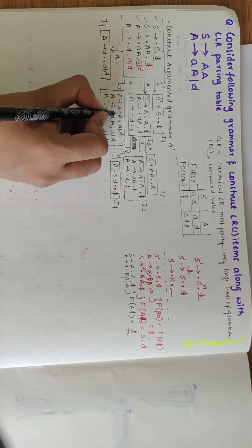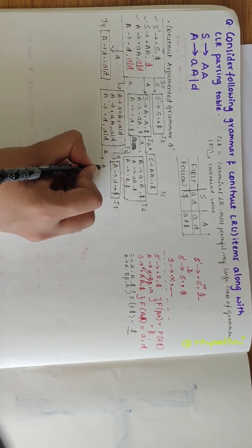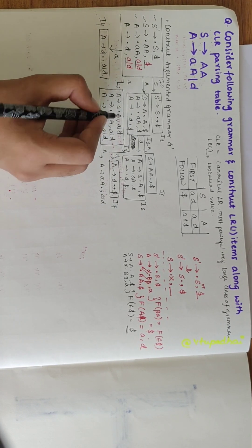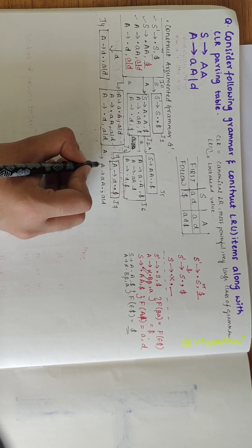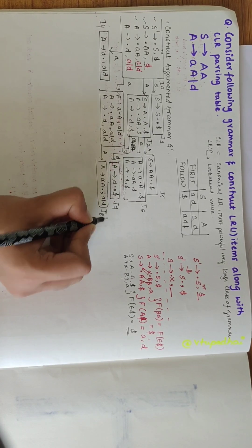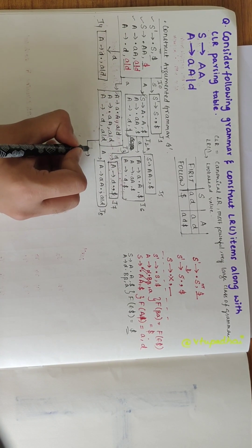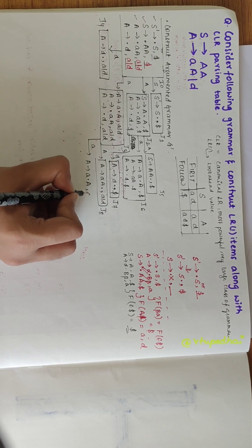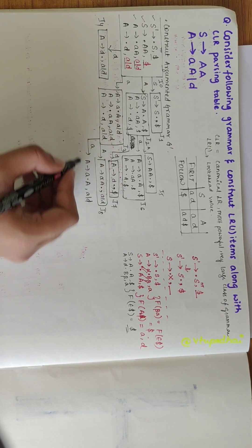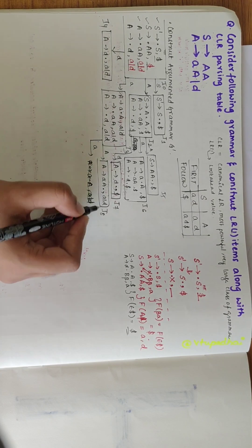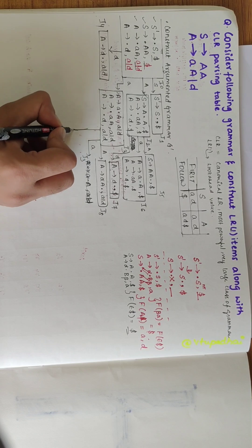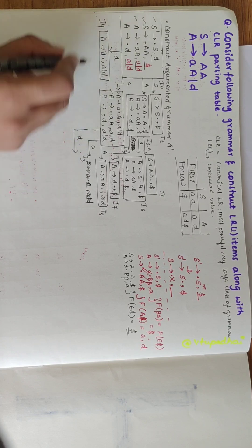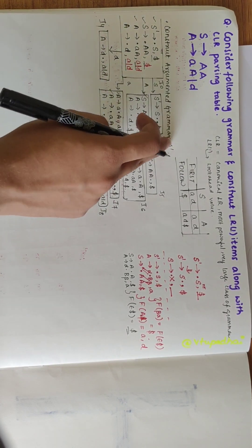Now checking I3: after the dot I have A. Over capital A, I would get A derives Aa dot, a/d. I put this in a box and name it I8. Coming to the second production, over small a, A derives a dot A, a/d is similar to I3, so I write I3 here. And over d, I would get I4 itself.